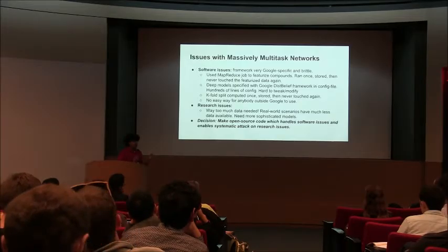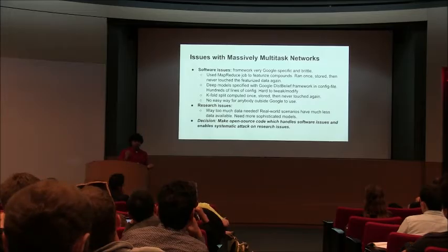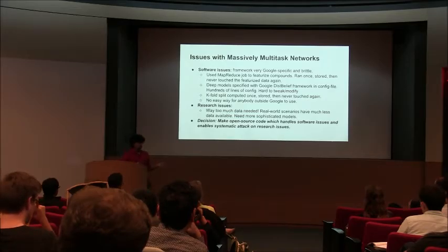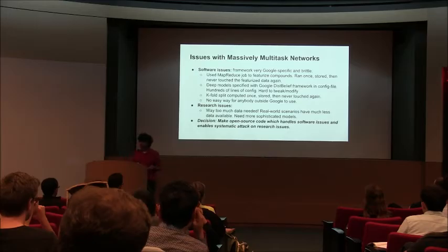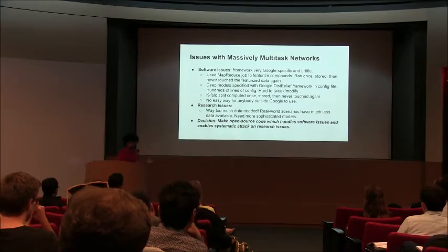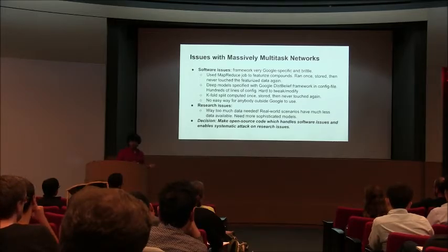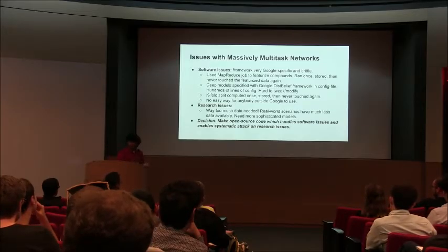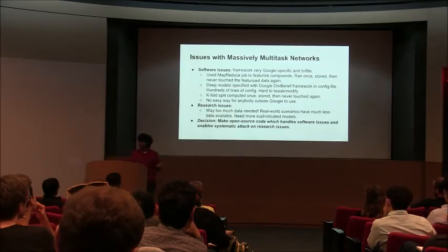The system we built previously was very brittle. We took all these assays, featurized them with circular fingerprints once, stored them in cloud storage, and never touched it again because it was such a pain to run. The deep nets were specified using Google's old deep learning platform from five years ago — a very brittle platform where defining a new type of deep net took hundreds of lines of config code with poor documentation. Even small changes, like switching from classification to predicting regression quantities like IC50s or PKs, required rewiring half the system.